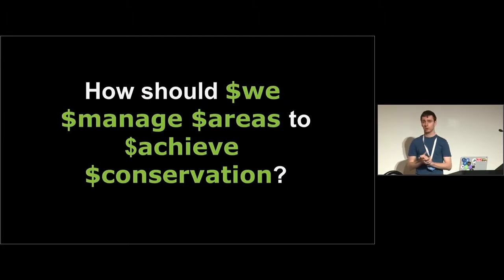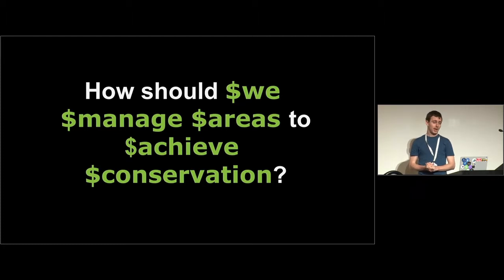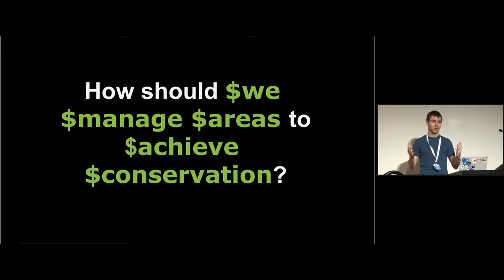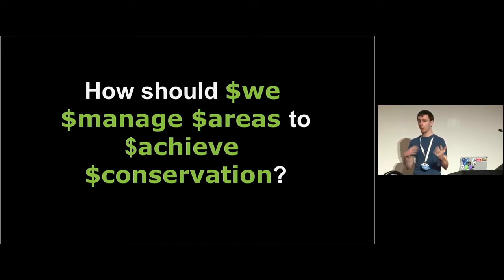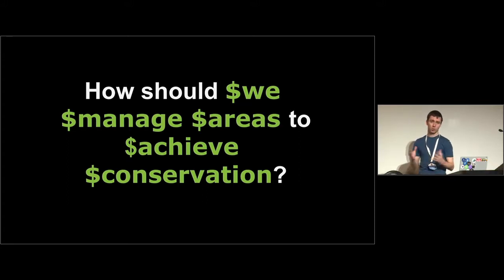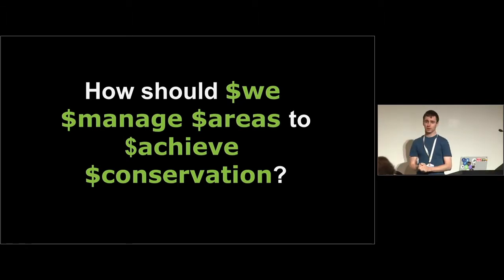Around the world, species are going extinct, things are not looking so good. So a central question in conservation is: how should we manage areas to achieve conservation? That's a pretty straightforward question, but there's a lot of variables. When we talk about 'we,' what group is actually trying to implement this? What legislative ability do they have? What resources? When we talk about 'manage,' what kind of management actions — protected areas, pest control? What's our measure of success, and what are we trying to conserve?